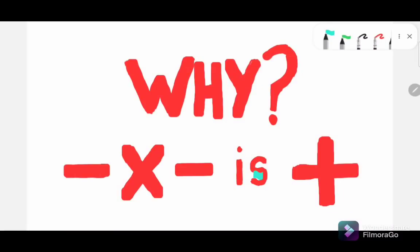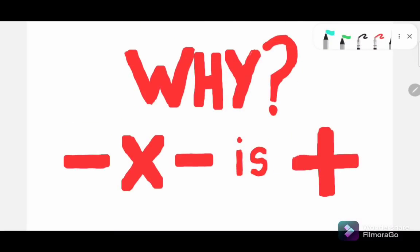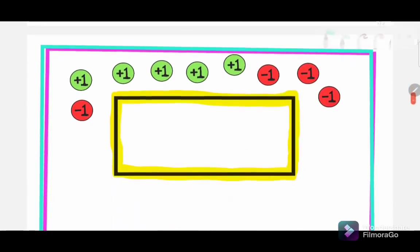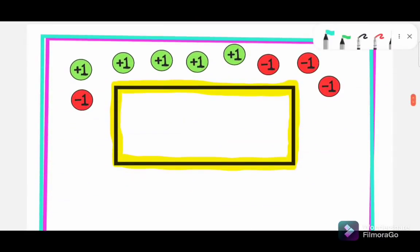Why negative times negative is positive. Let me answer this question with an example. Here as you can see there are two colors of balls. Every green ball represents plus one and every red ball represents minus one.